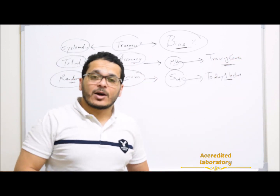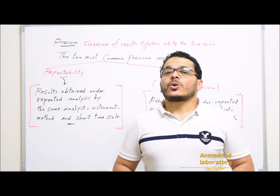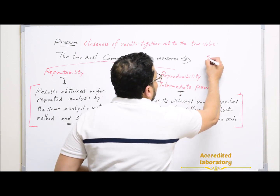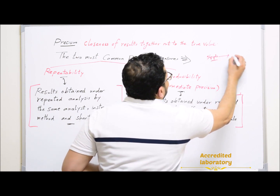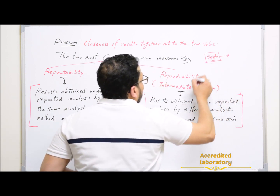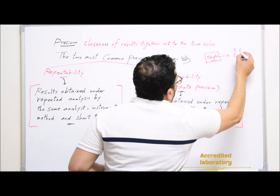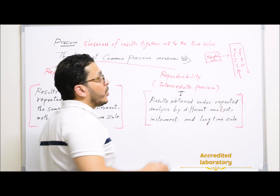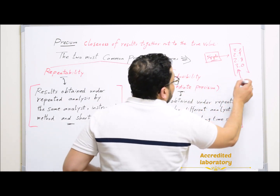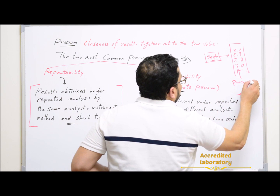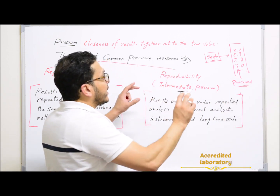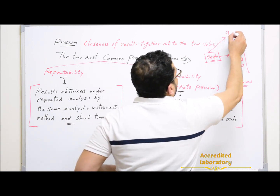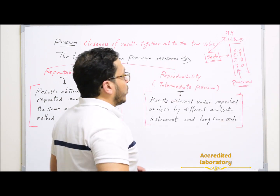Let's start now with precision. Precision, as you know, is the closeness of results together — not to the true value. So if you spike your sample, for example, it was 5 PVB, and you get results far from this true value — far from 5 PV — like 3.2, 2.9, 2.8, 3.0. All of these results are close together but far from the true value. In this case, your results are precise but not accurate. To be accurate, results should be close to the true value, like 4.9, 4.8.